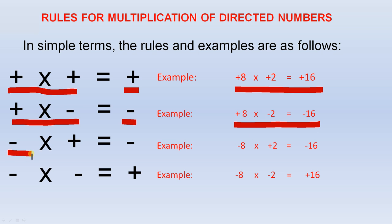If you multiply a negative number by a positive number, your answer is negative. And here is your example. And if you multiply a negative number by a negative number, your answer is positive. And here is your example.